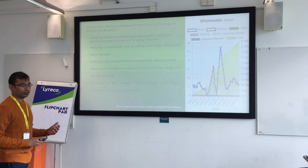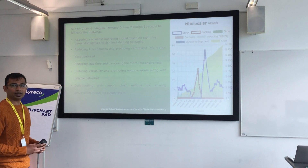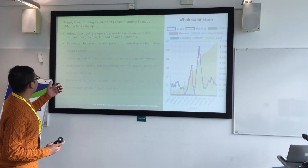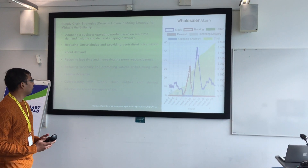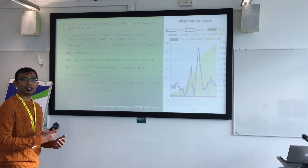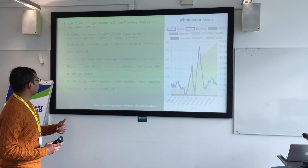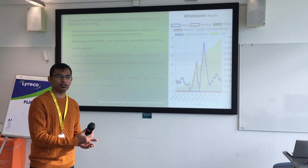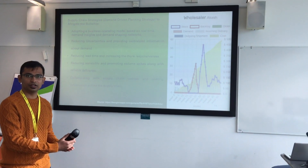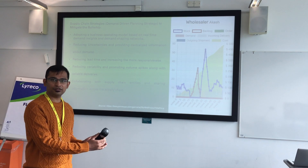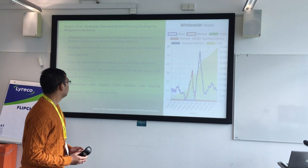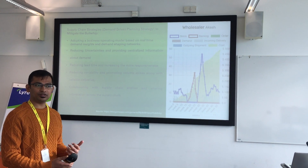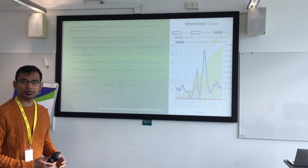Supply chain strategy: what I observed is that it is a demand-driven planning strategy to mitigate the bullwhip effect. We must adopt a business operating model based on real-time demand where we can shape and grasp our network demand, reducing uncertainties and providing centralized information about demand. Without knowing demand patterns or when consumers will buy the right amount of products, maintaining the supply flow is very hectic. In this era of technology, we have to take advantage of technologies to overcome these situations, including reducing lead times, increasing responsiveness, reducing variability, and promoting volume spikes along with reliable deliveries.